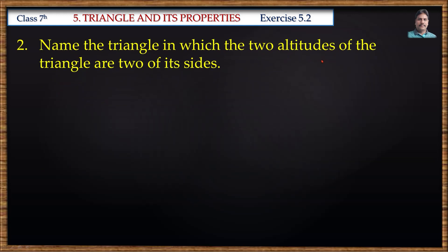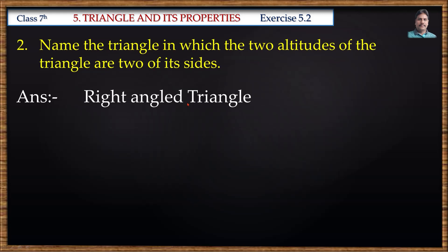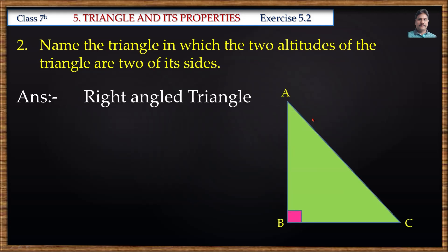Second problem: Name the triangle in which two altitudes of the triangle are two of its sides. The answer is a right-angle triangle. Suppose ABC is a right-angle triangle where angle B is 90 degrees.